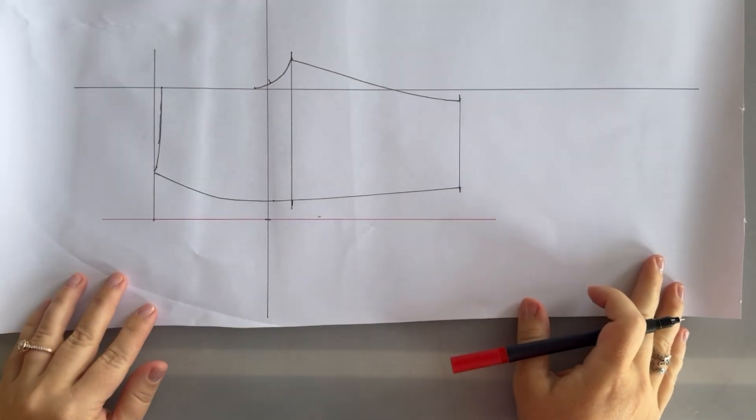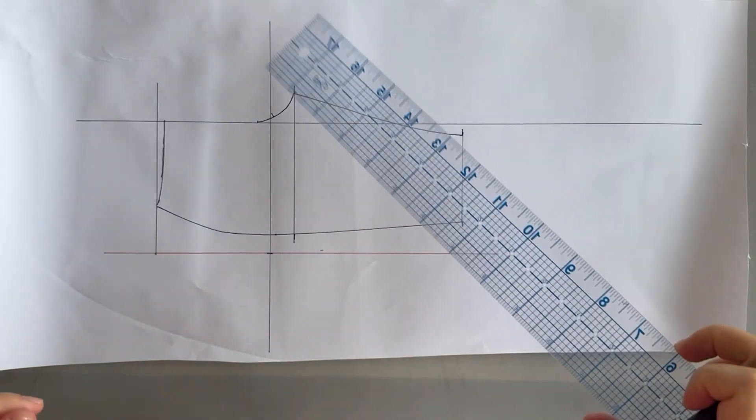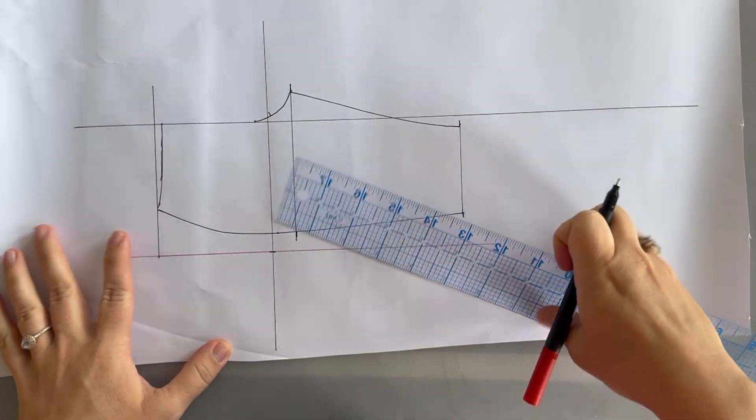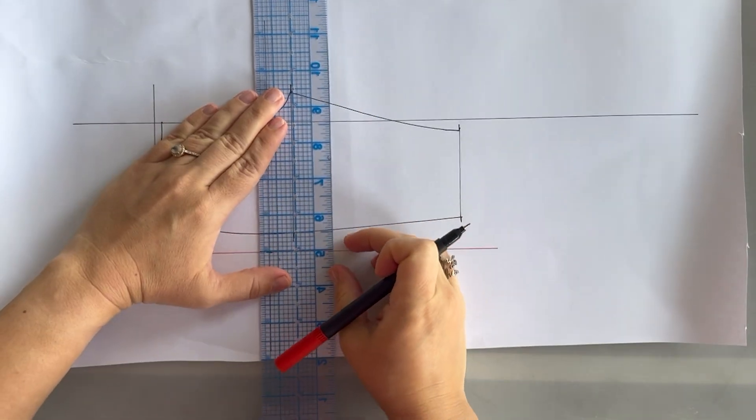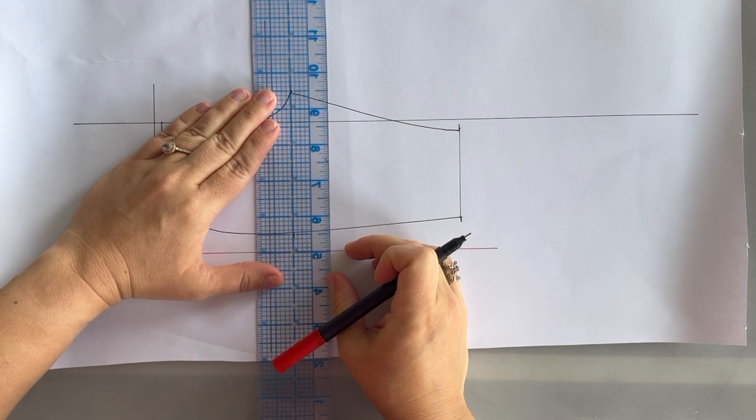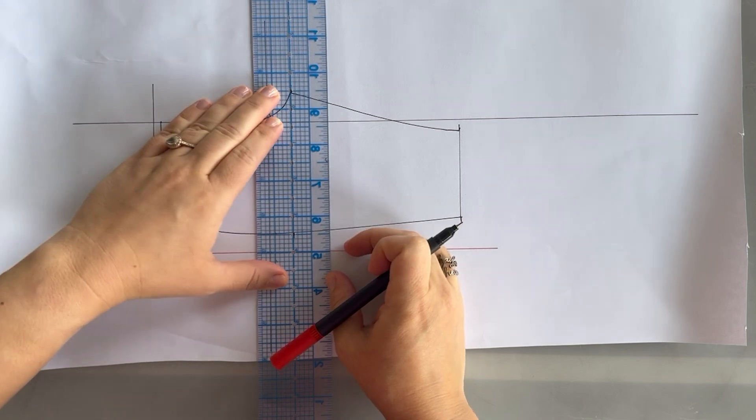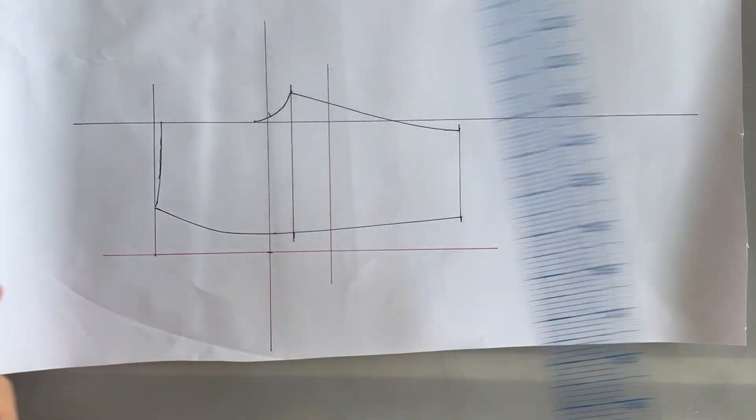And then we're going to determine how long we want our shorts to be. So in the book, they took it two inches down at the inseam. So we'll just do one inch down. So below that crotch line, that's where our inseam starts. I'm going to go one inch down and create a mark across my pant.